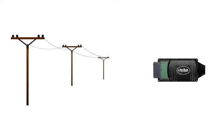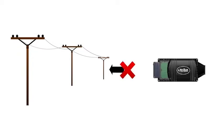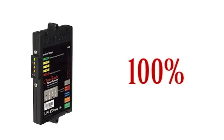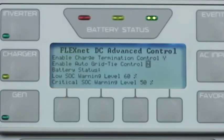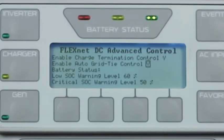The second one is Auto Grid Tie Control. This feature is only operative when you have grid interactive inverters in your system. This feature will command all the inverters to turn off the Sell feature every night at midnight and will not turn it back on until the FNDC has met its parameters. To enable this feature, change the value to Y. Or to disable, change it to N.